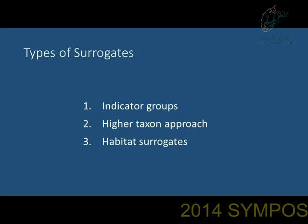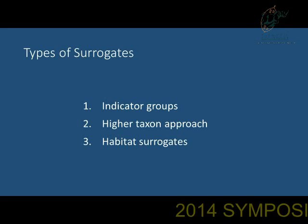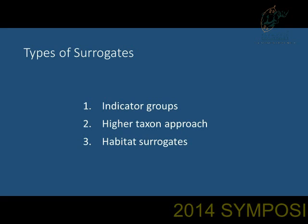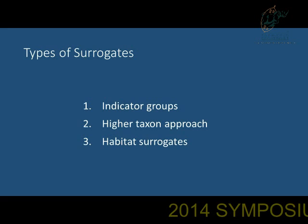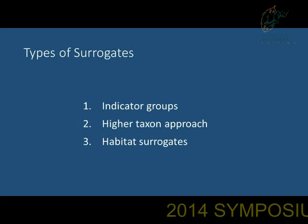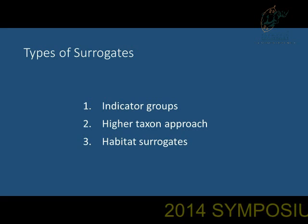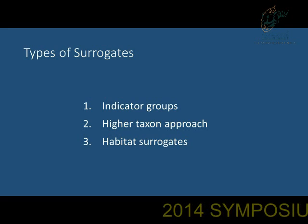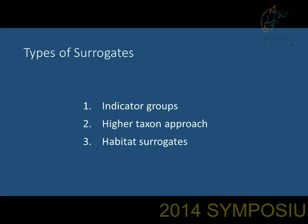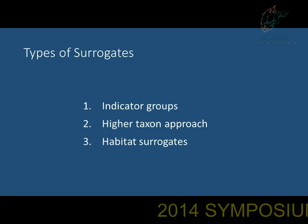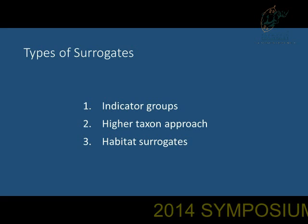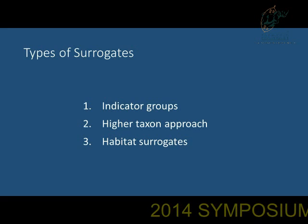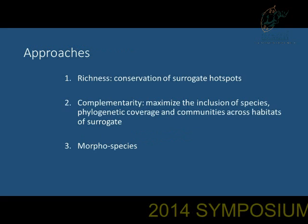There are different types of surrogates. One is indicator groups — a classic one used in conservation planning is the vegetation layer, fed into algorithms like MARXAN to give optimal representation and maximize conservation effect. Then there is the higher taxon approach, where for spiders we use genera or families to represent diversity. And then there are habitat surrogates, where you use environmental variables as a surrogate for diversity, which is what Ian spoke about.